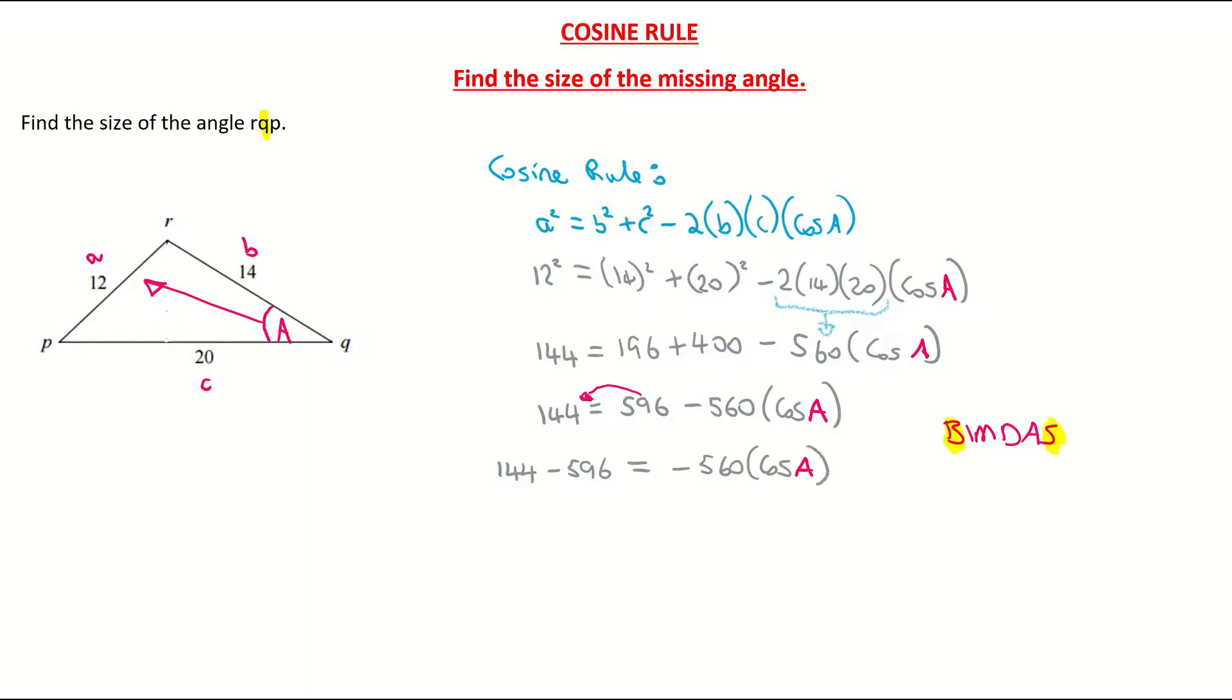That's the important line there. As I said, some people can get stuck with the subtraction too early. I'm now going to take these away from each other. So 144 minus 596 is giving me -452 is equal to -560 cos of my angle.